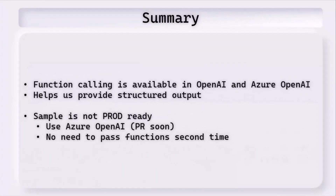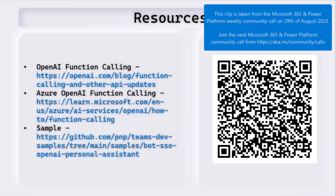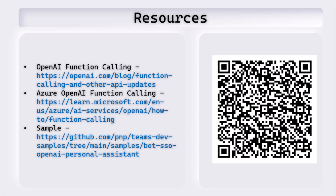In summary, function calling is available in both OpenAI and Azure OpenAI. In this sample we saw how to use it with OpenAI, but it can be changed to Azure OpenAI as well. It makes sense to use Azure OpenAI because we are dealing with internal data, so I'm planning to create a pull request soon for the sample using Azure OpenAI. Also, because we are calling OpenAI twice, in the second request there's no need to pass the functions, so I need to clean that up as well. Here are some resources that were used, and I'll be monitoring the chat for any questions. Thank you very much.